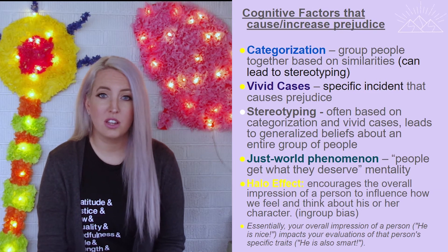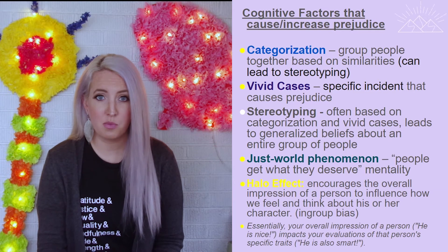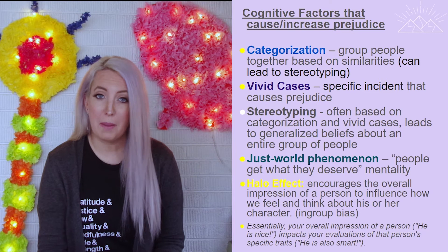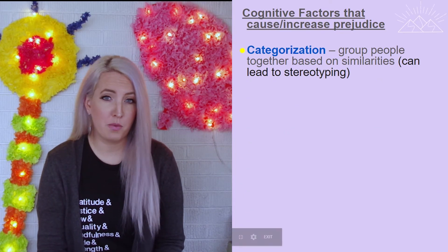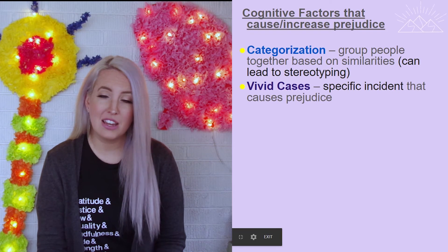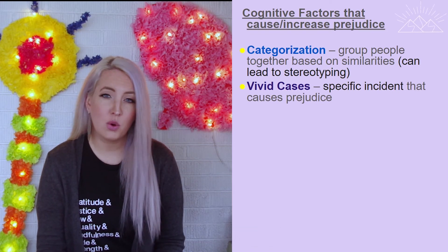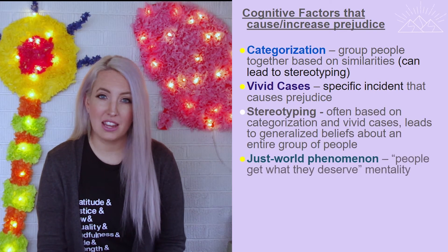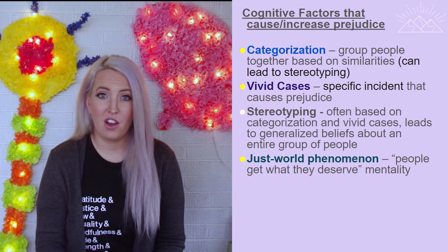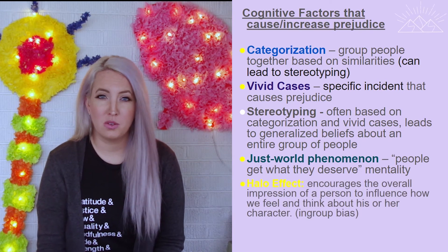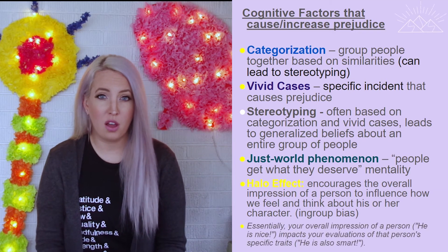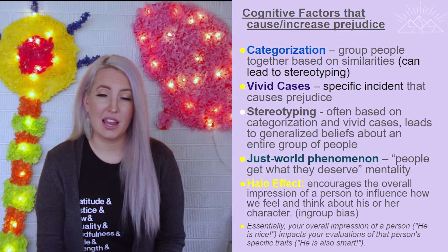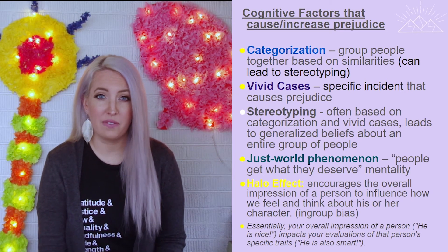Finally, there is one cognitive factor that leads to more positive prejudice — known as the halo effect. This is the positive generalization we make about a group or individual, where we take one positive factor and draw conclusions about other aspects of a person's character based on a single interaction. If we meet someone and they are nice to us, we might also conclude they are intelligent or thoughtful, even based only on that one encounter.